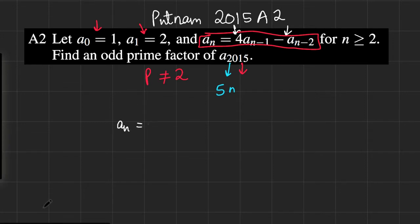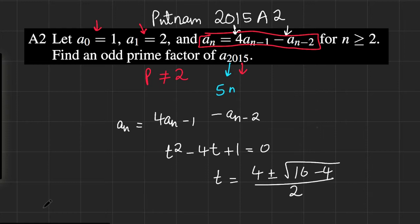The recurrence relation is A_n equals 4A_{n-1} minus A_{n-2}. Its characteristic equation would be T squared minus 4T plus 1 equals 0. Solving this quadratic equation, we get that T equals 4 plus or minus the square root of 16 minus 4, which is just 12, over 2. The square root of 12 is 2 times root 3, so this would simplify to 2 plus or minus the square root of 3.